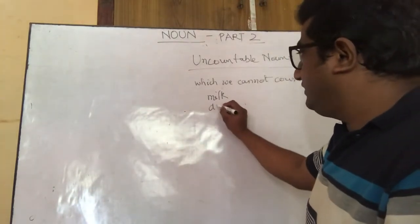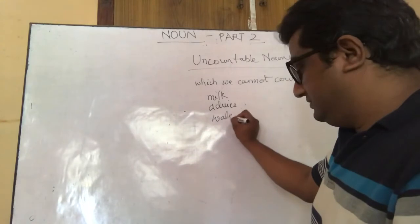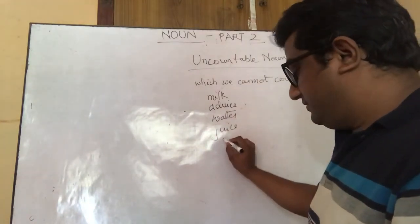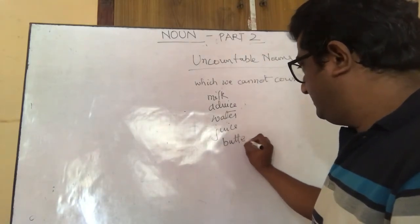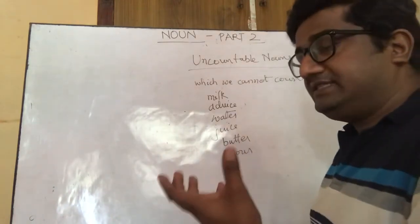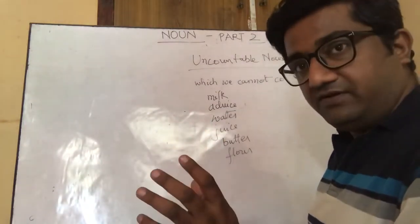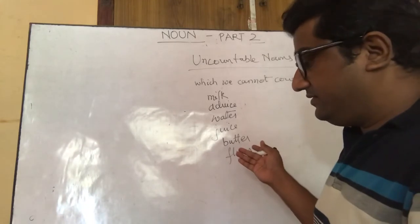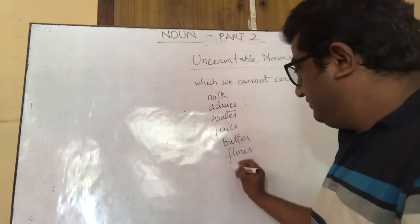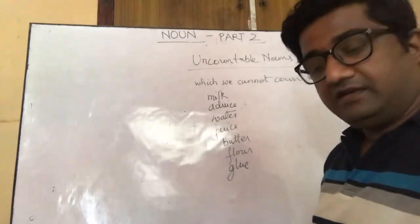More examples of uncountable nouns: advice — you cannot count someone's advice; water; juice; butter; flour (F-L-O-U-R) — that is 'ata' or 'maida' in Hindi, though some people mispronounce it as 'flower', the correct pronunciation is 'flour'; and glue. You cannot count these nouns, so they are your uncountable nouns.